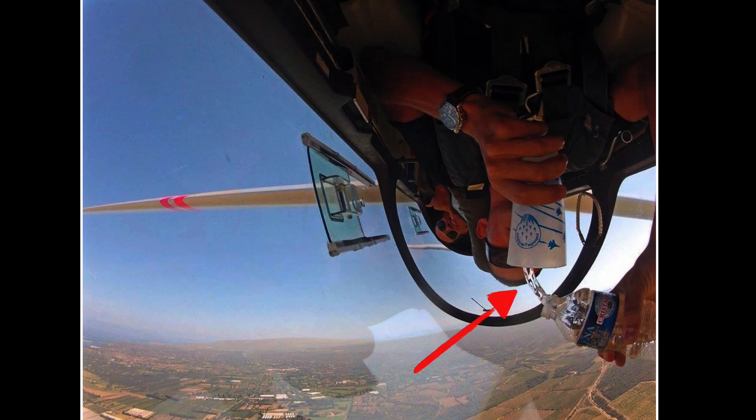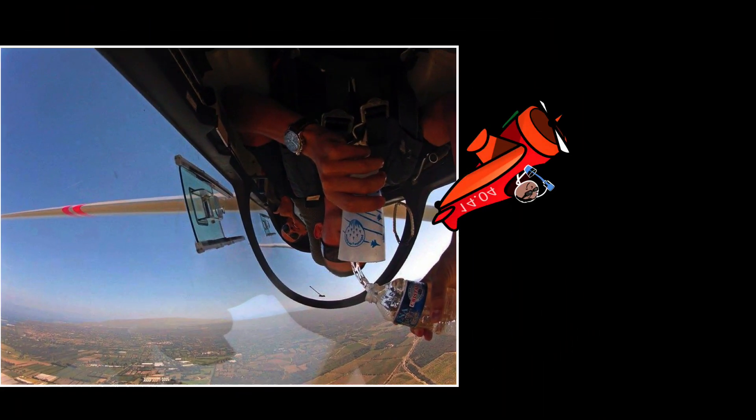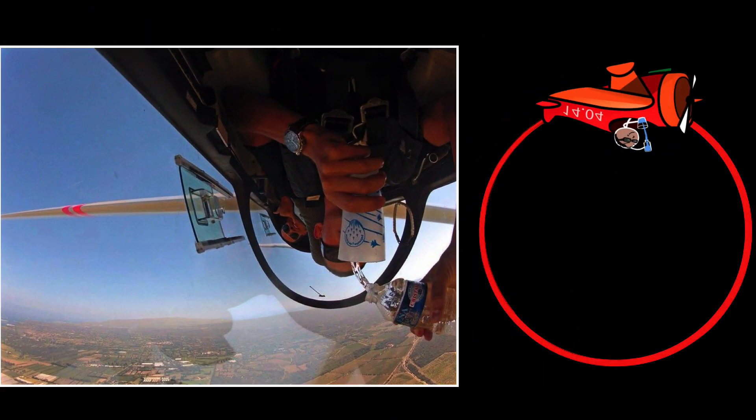Why is the water flowing upwards against gravity? Well, here's a clue. Not only is this plane upside down, but it's actually going in a curve.